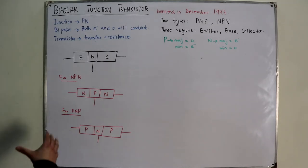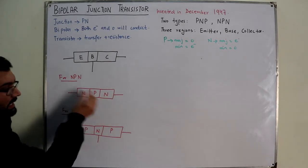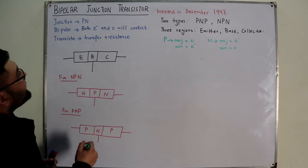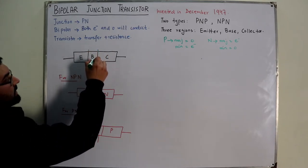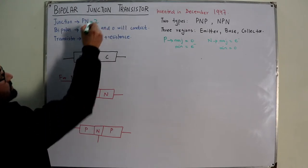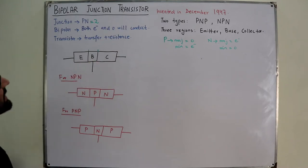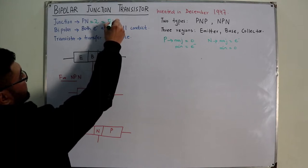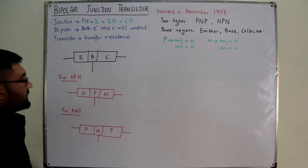In the NPN transistor, you have one PN junction between emitter and base, and another between collector and base - making two PN junctions total: the emitter-base junction and the collector-base junction. You could think of it as two diodes connected back to back. Because of the two junctions, it is also called a bi-junction transistor.